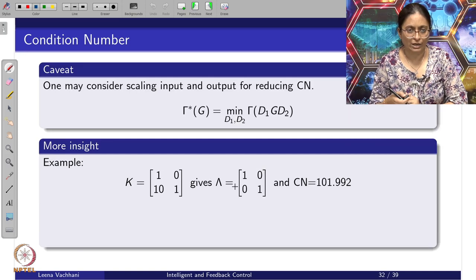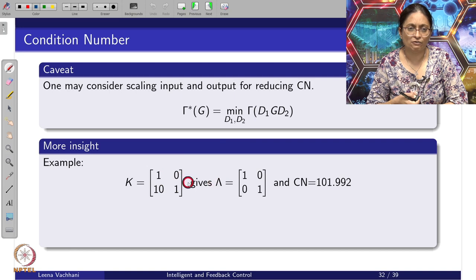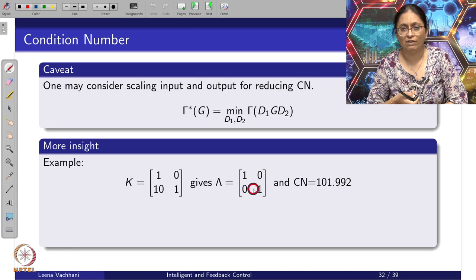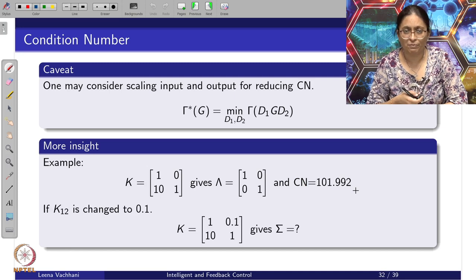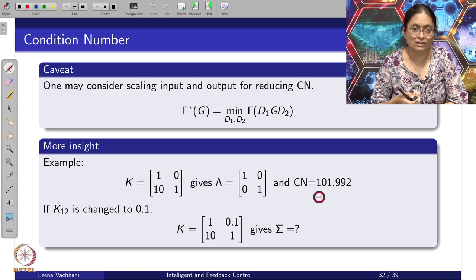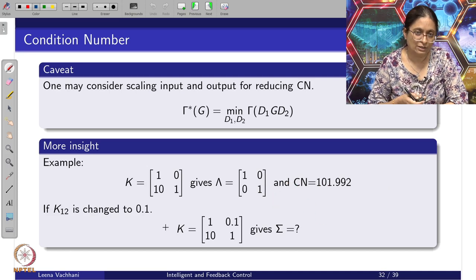Let us consider a case where the gain matrix G(0) is given as [1, 0; 10, 1]. The RGA matrix turns out to be a very nice [1, 0; 0, 1], suggesting Y_1 paired with U_1 and Y_2 paired with U_2. However, the condition number turns out to be 100, which is still large.